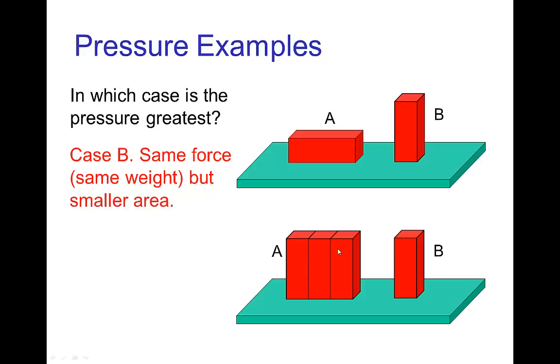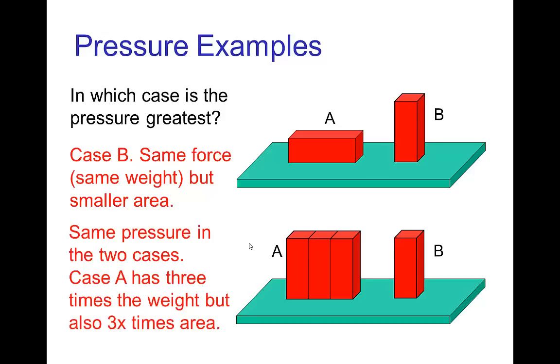Now how about this case? We have three bricks together, let's say glued together, compared to a single brick. Which case is the pressure greater or is it the same? Well, in this case the pressure is the same. So even though the three bricks have three times the weight, they also have three times the area, and so the weight divided by area is the same in both cases.